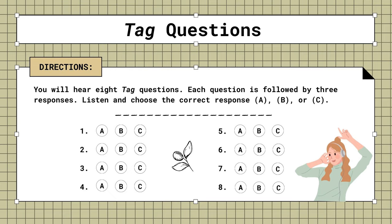5. You haven't seen my watch anywhere, have you? A. Is it new? B. I'm afraid not. C. Anywhere is fine.